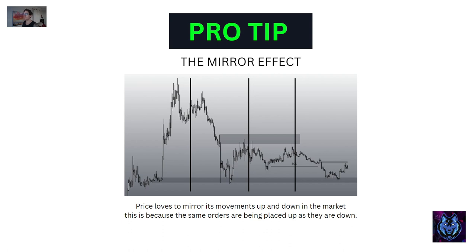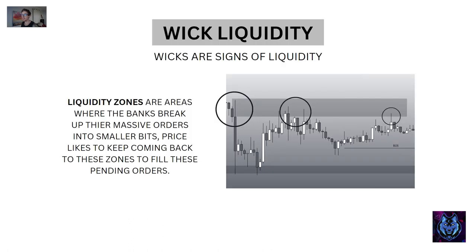A pro tip: the market likes to create what I call the mirror effect — it likes to repeat itself. Whatever it does on the upside, it likes to repeat on the downside. You'll notice displacement up here, displacement down here, displacement up, displacement down — it's an exact mirror. This gives us a method for creating probability. Price mirrors its movements because the same big players are working the market up and down, which gives us a deeper understanding of key levels.